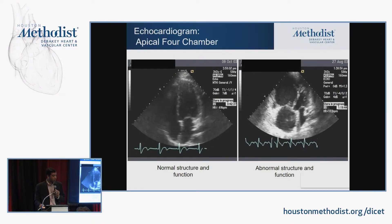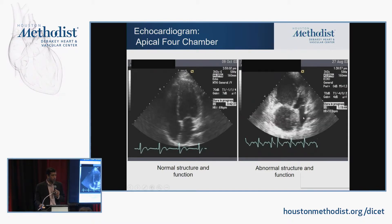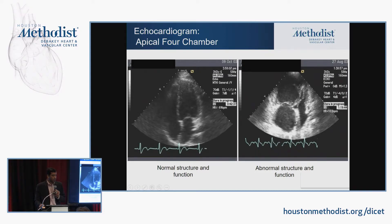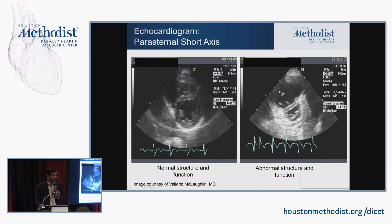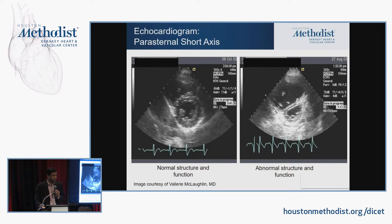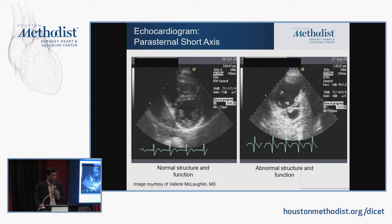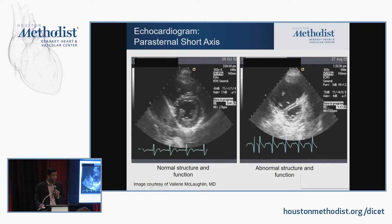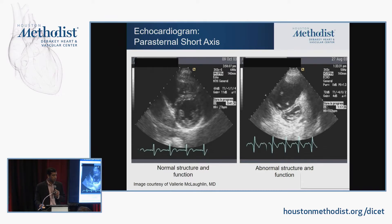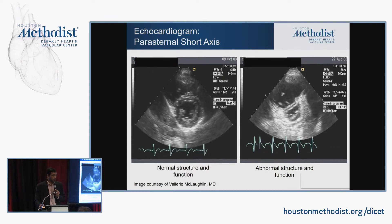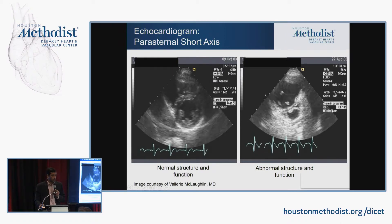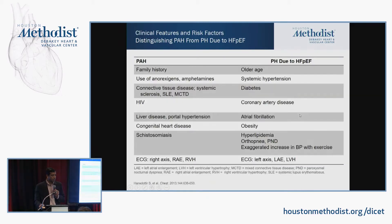This is an apical four-chamber view. The normal echo is shown, and in somebody with advanced PH, the LV is underfilled, the left atrium is very small, and the right atrium and right ventricle are enlarged with decreased function. On the parasternal short axis, advanced pulmonary hypertension shows markedly decreased RV function with a small LV and septal flattening in both diastole and systole from pressure overload.